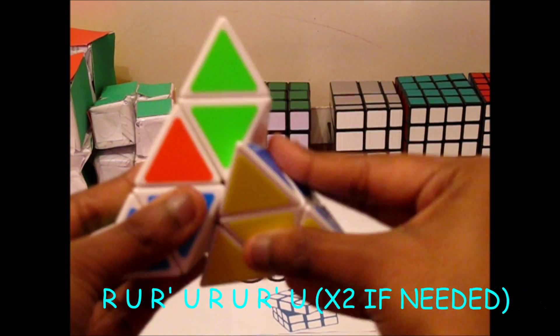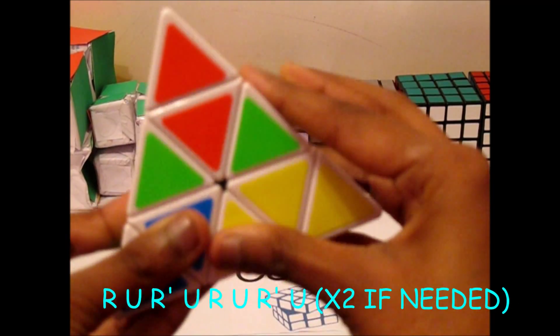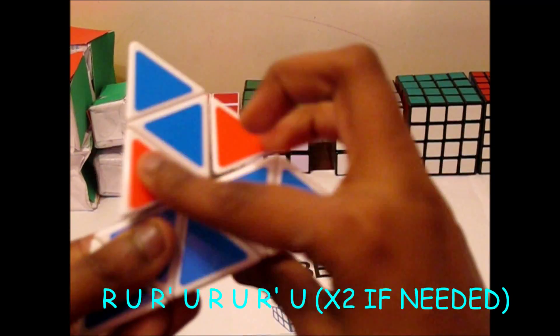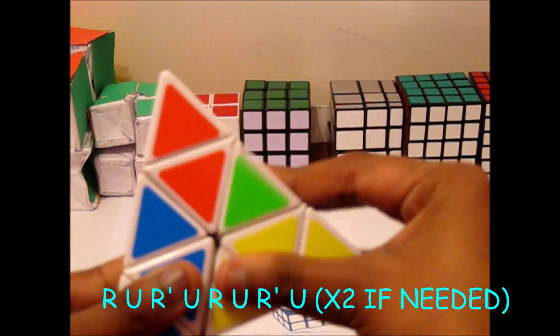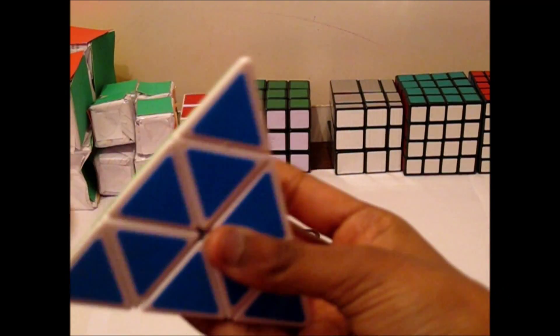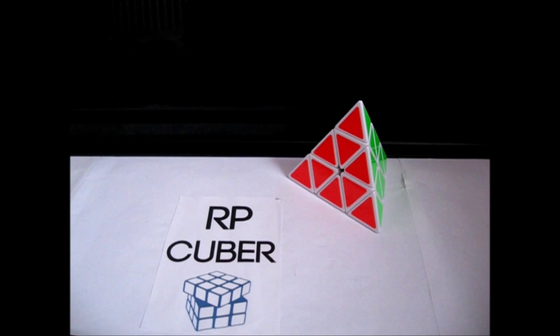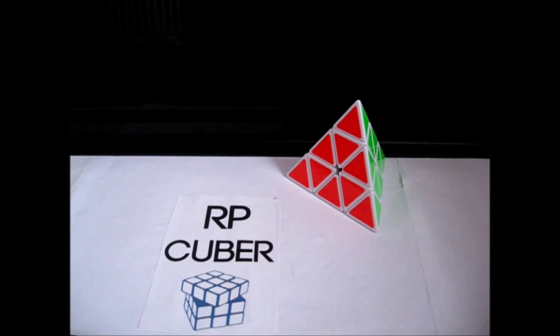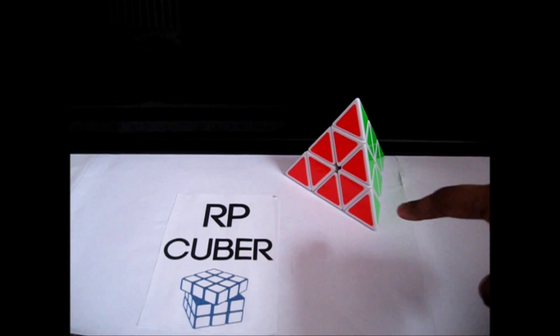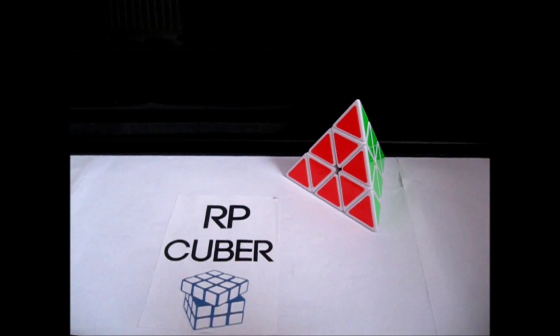It doesn't matter which way these centers need to go around. You might have to perform this algorithm two times depending on which way they need to travel. So you perform this algorithm. And then the Pyraminx is solved.